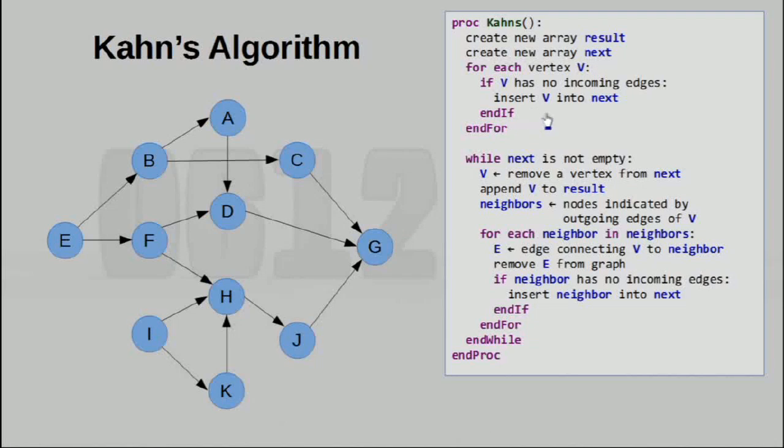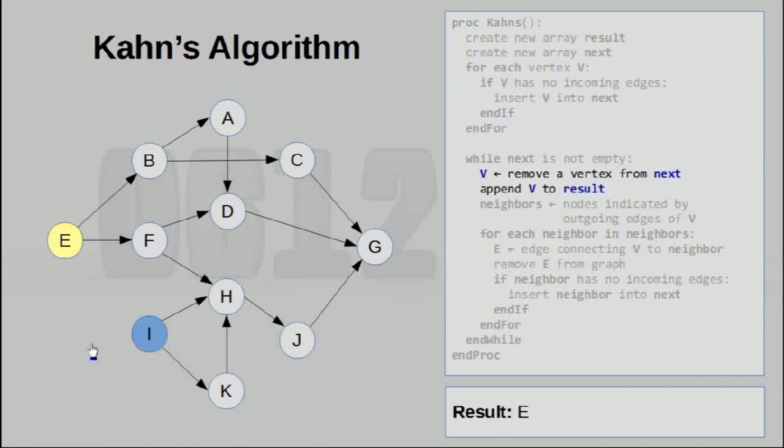We start off by taking a look at all the vertices, and basically we select the vertices without incoming edges, and add them to the array next. For the purposes of making this a little bit easier to understand, we are going to signify the array next as vertices colored in dark blue. So yeah, as you can see, these two vertices are in the array next. So alright, let's move into the body of the algorithm.